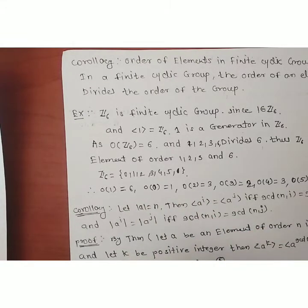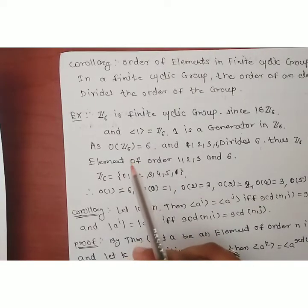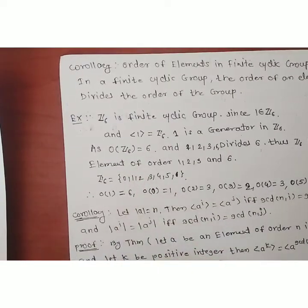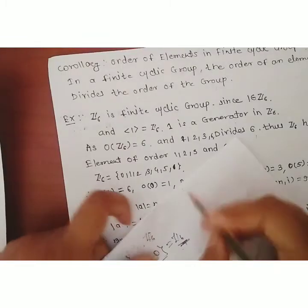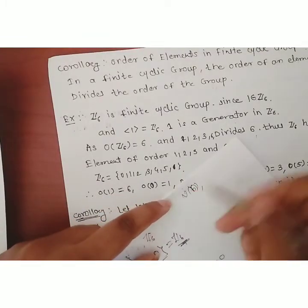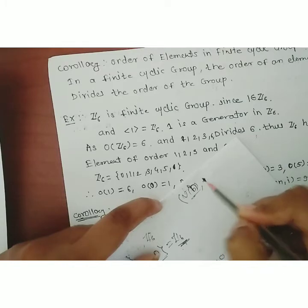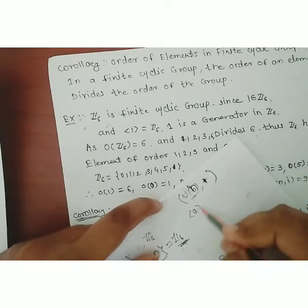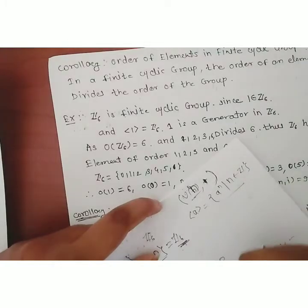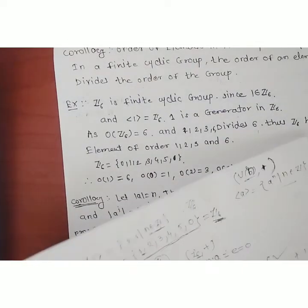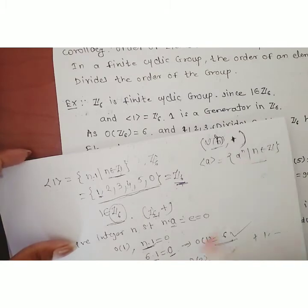Note which binary operation is used in the group. Here Z6 uses addition. If you have U(6), that is a group under multiplication. In the general case U(n) is a group under multiplication, generated by a^n for some n in Z. It is important to identify which binary operation is present in the group.